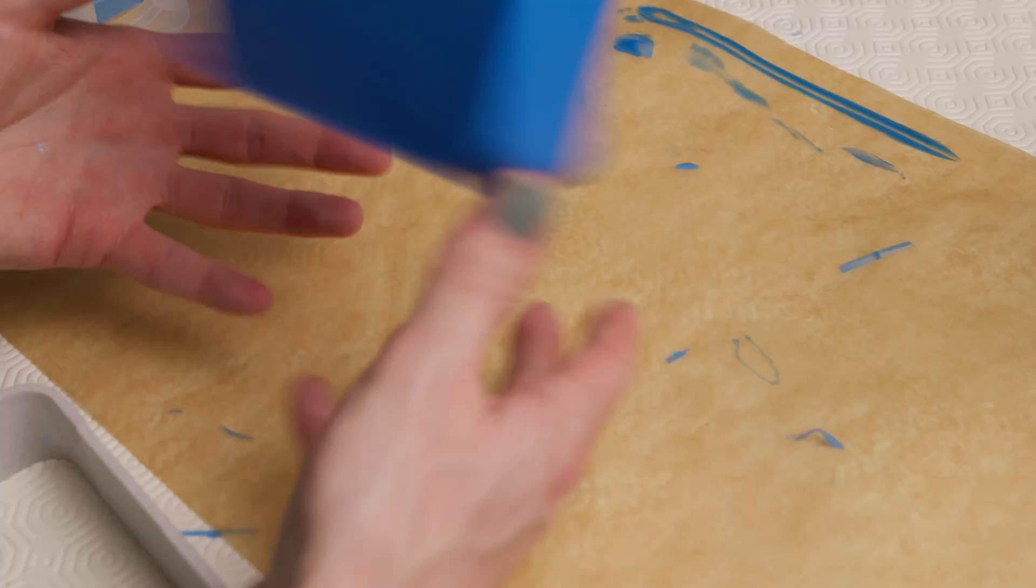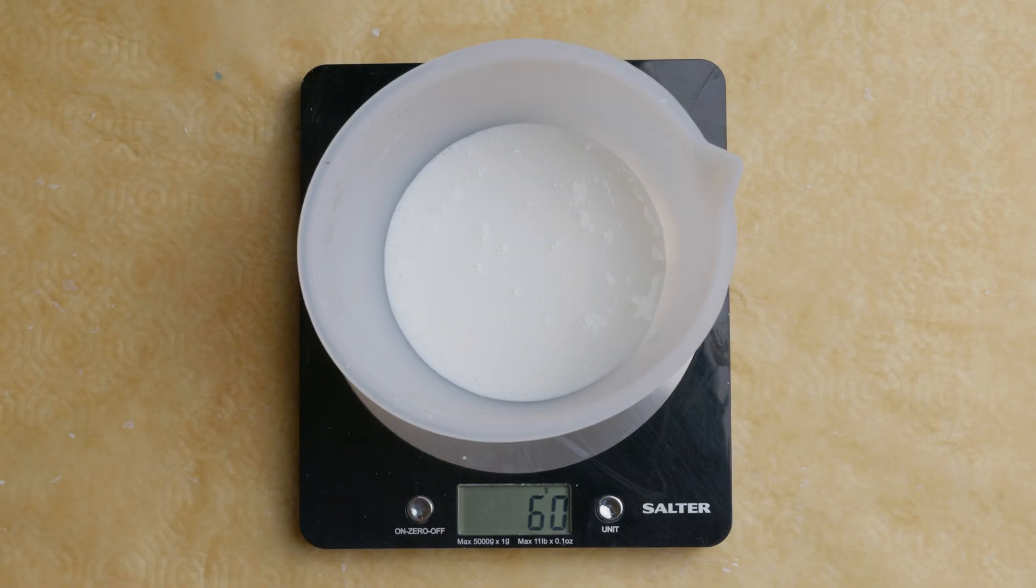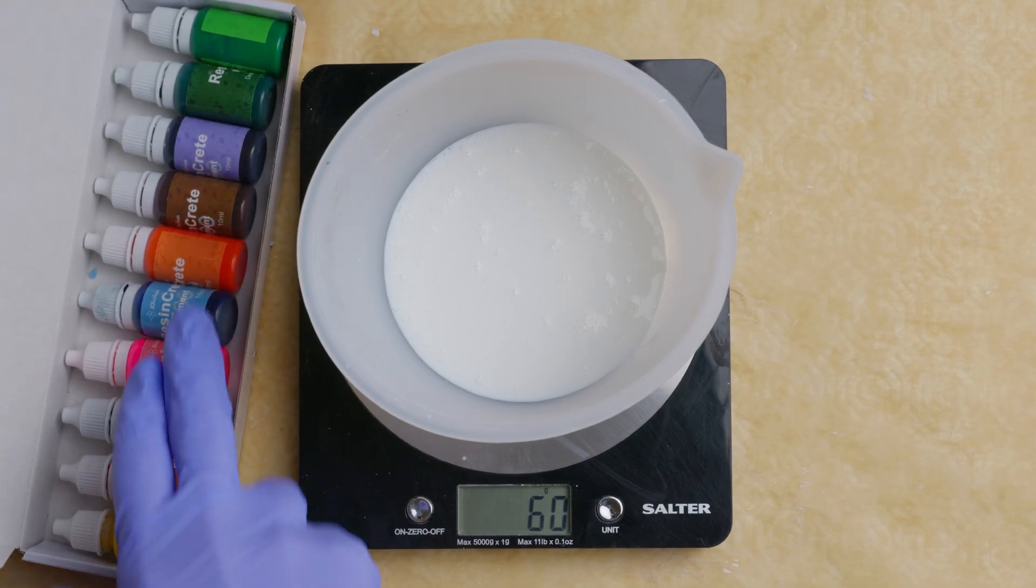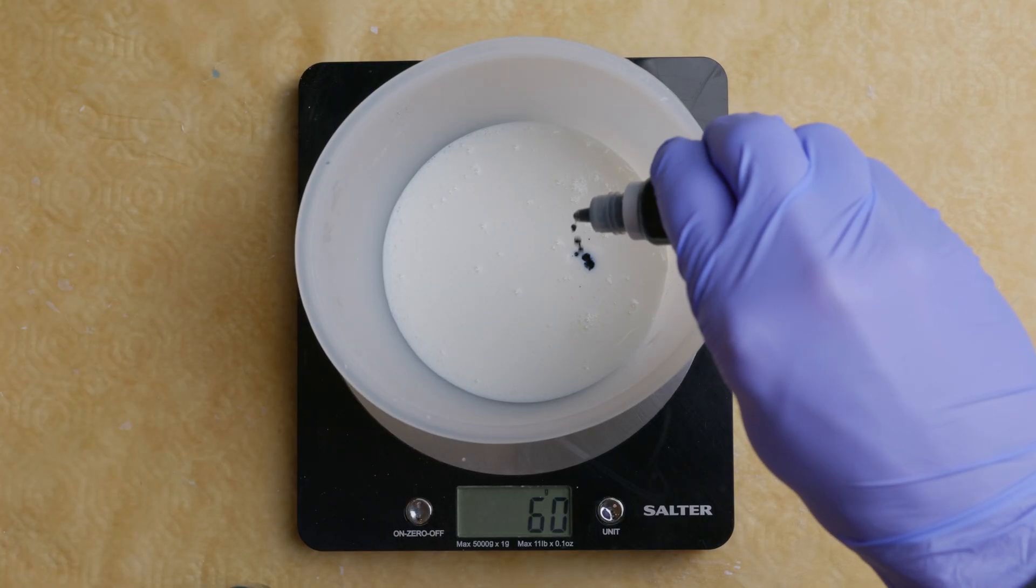Now for the fun part, our first casting. I'm using a product called Jesmonite AC 100 for casting here. You can use something like cement or resin. Jesmonite is strong, sands really easily, and it takes pigment beautifully.